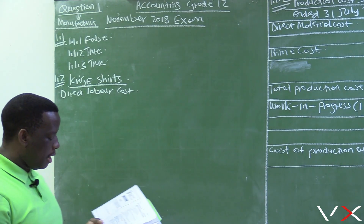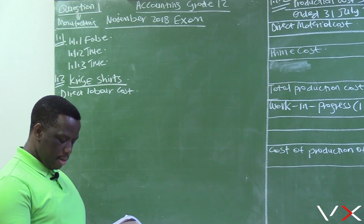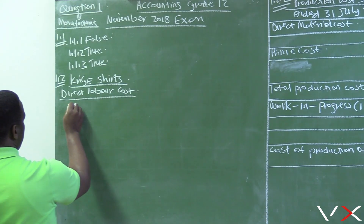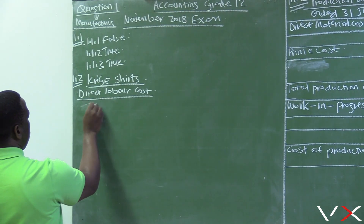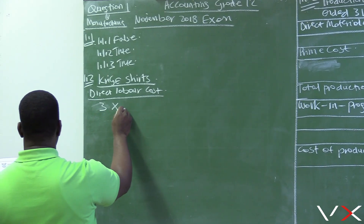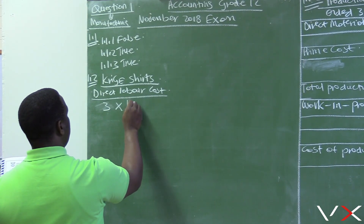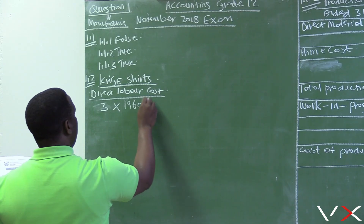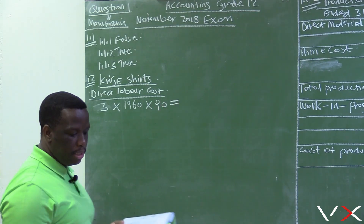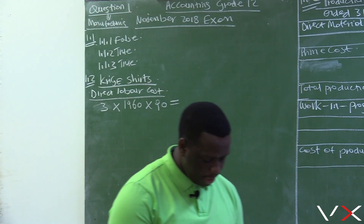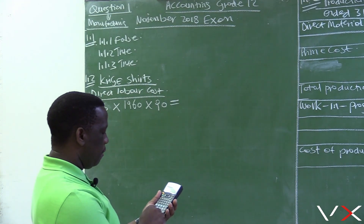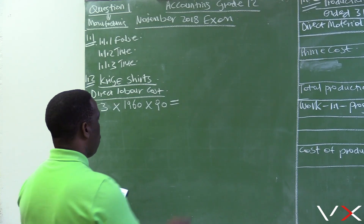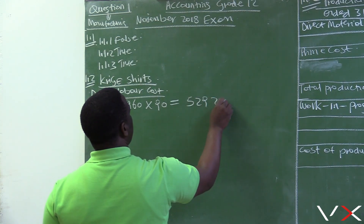We'll calculate the direct labor of the one worker separately. For the three workers who worked the full hours — 3 workers × 1,960 hours × 90 rand per hour — the basic normal time equals 529,200.